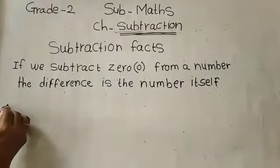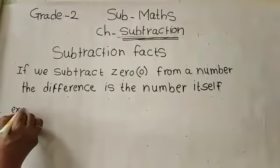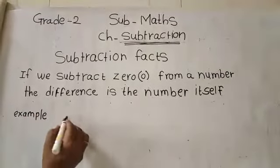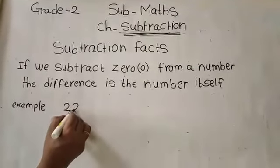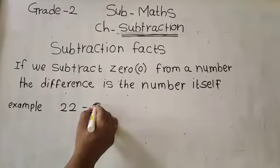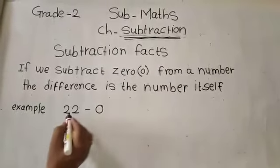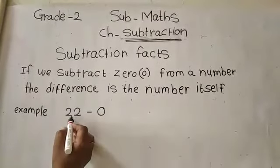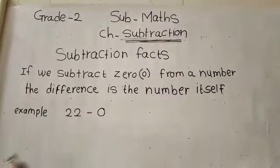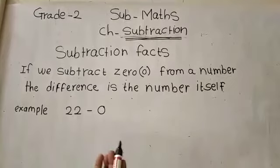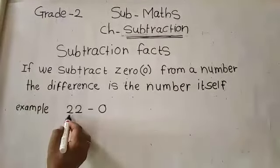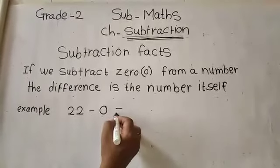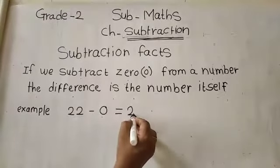Here is 22 minus 0. We have to subtract zero from 22. Zero means nothing, so 22 minus 0 — the answer is 22.